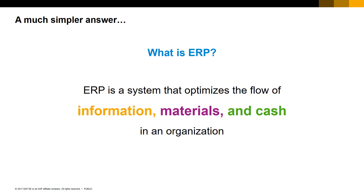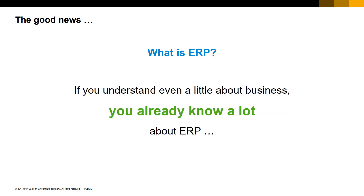We are going to talk about the business processes inside an ERP system in this course, but I have good news. If you have any knowledge of business — any at all — you probably already know a lot about how an ERP system works. Because an ERP system is just a model of a business. If a business performs a particular task, then the ERP system can provide an app to support that task. We generally don't make business apps unless they do something that people actually need. So the study of ERP is the study of business.